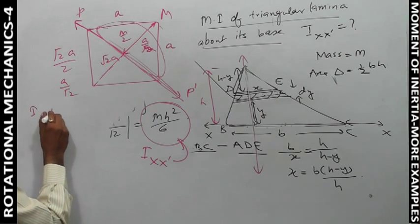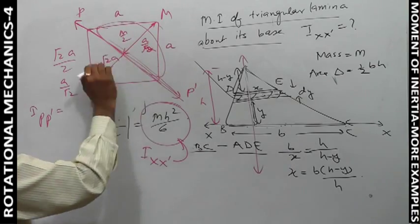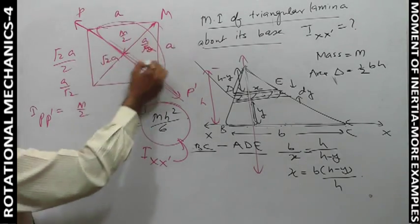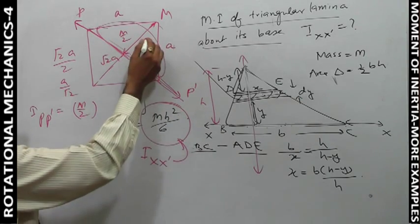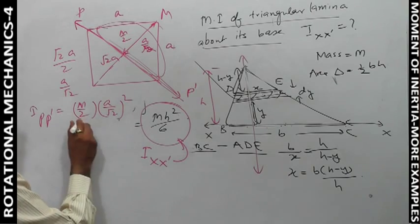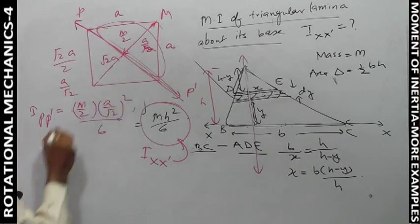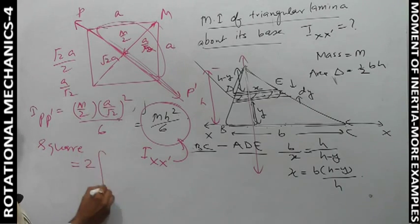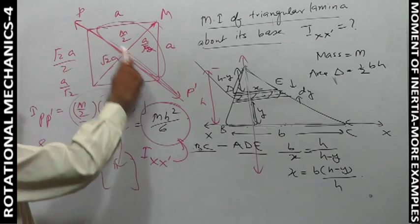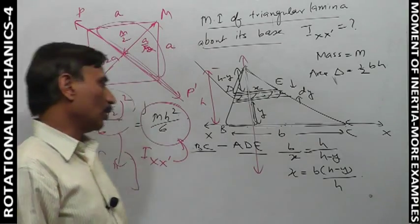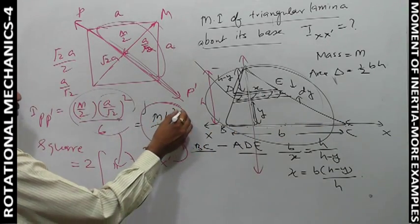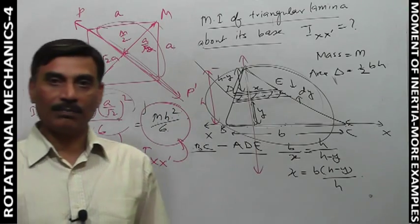For the square, we double it: 2·(m/2)·(a/√2)²/6. The important result is that triangular lamina's moment of inertia about the base is mh²/6, where h is altitude and m is the mass of the lamina. Understand it.